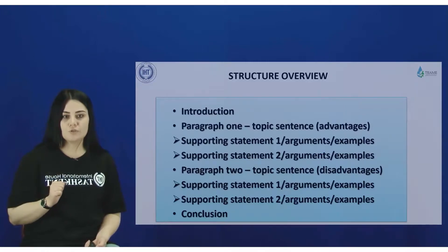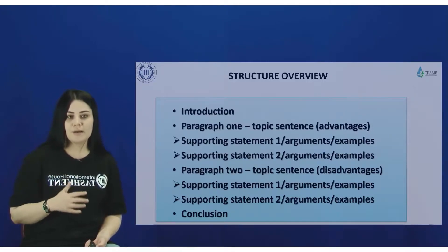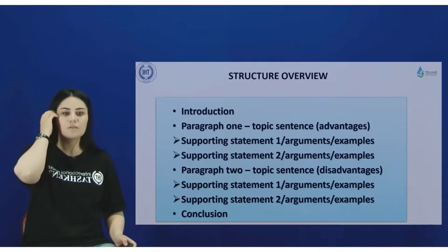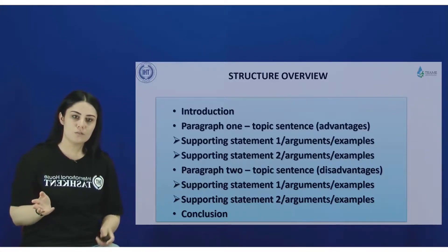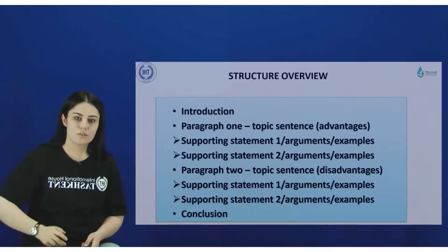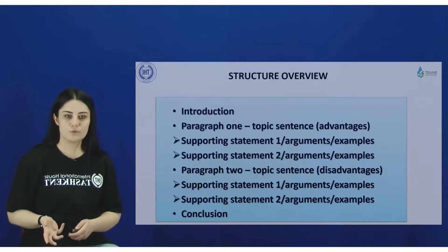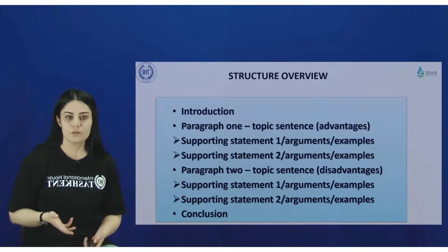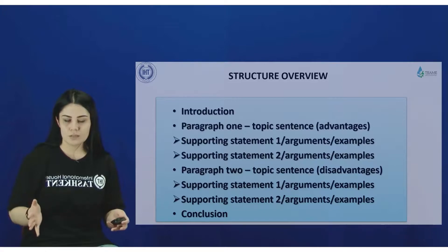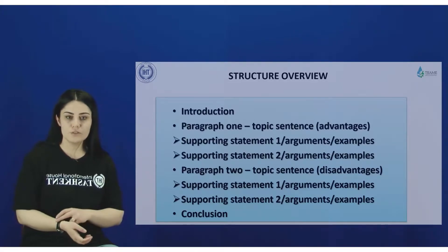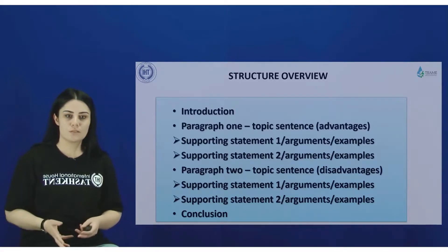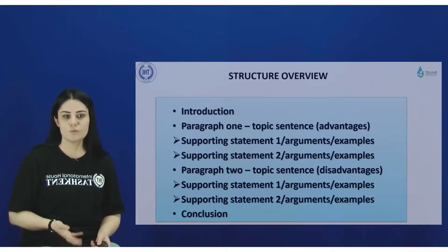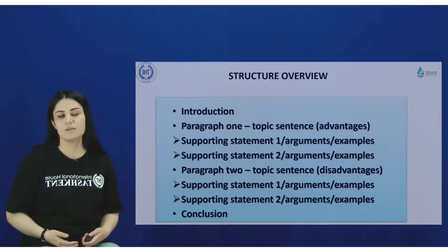First comes the introduction. Then paragraph one: a topic sentence about advantages, followed by supporting statement one with arguments and examples, and supporting statement two with arguments and examples. Then paragraph two: a topic sentence for the disadvantages of the issue, followed by supporting statement one and supporting statement two with arguments and examples. At the end comes the conclusion.